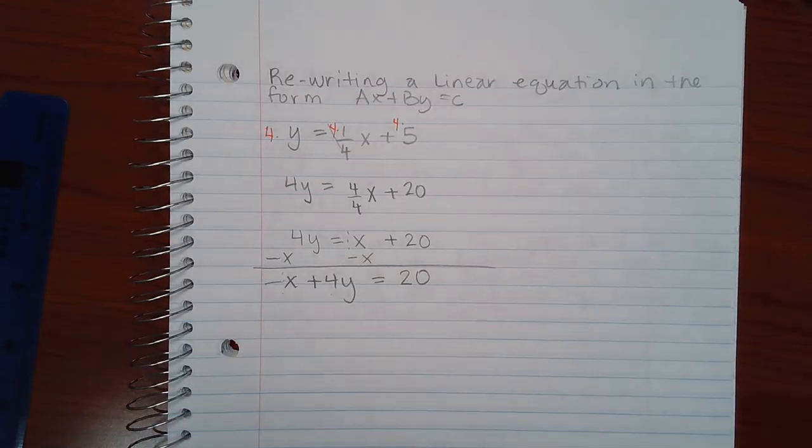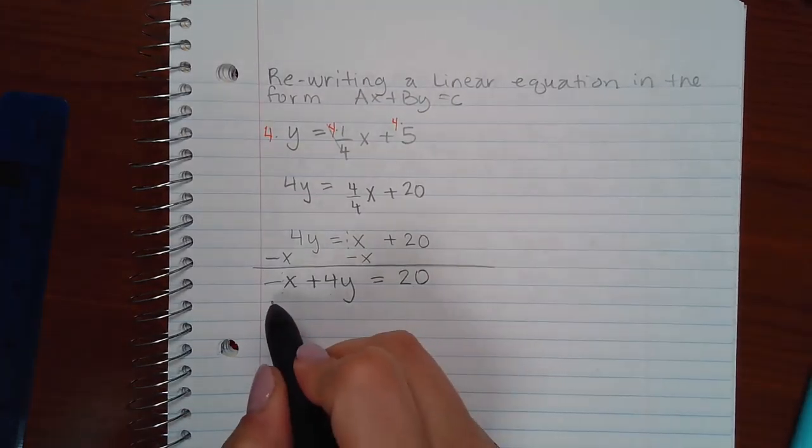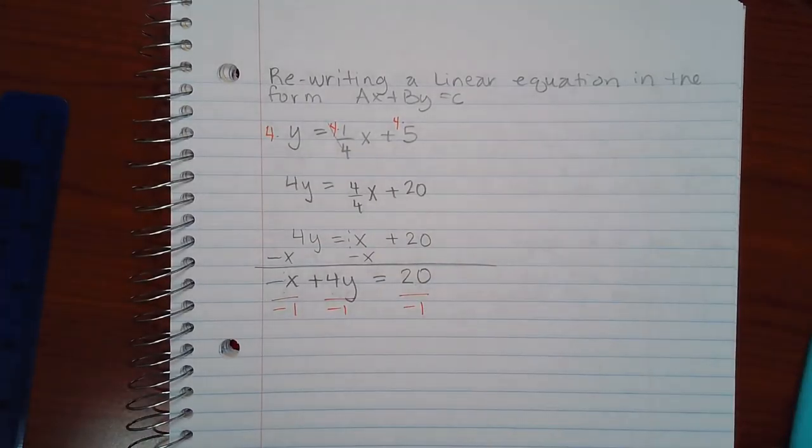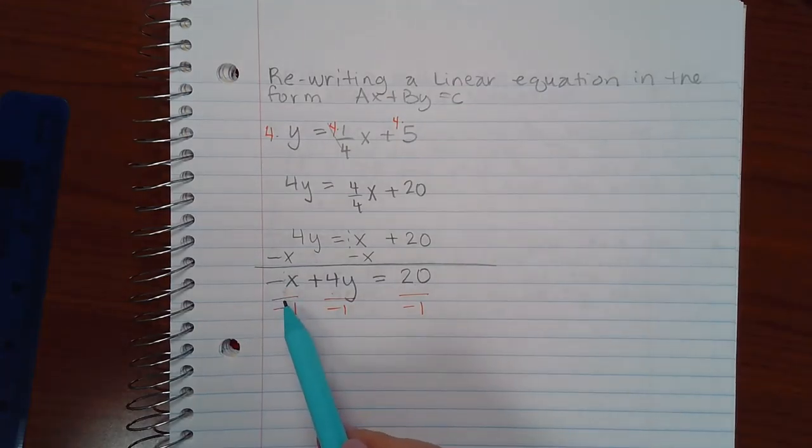To change that, what you can do is divide each term by a negative 1. Or you can multiply each term by a negative 1. Essentially, what you're going to end up doing is changing the sign of every term. So a negative divided by negative will cause it to turn positive.